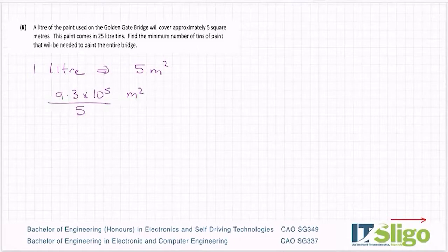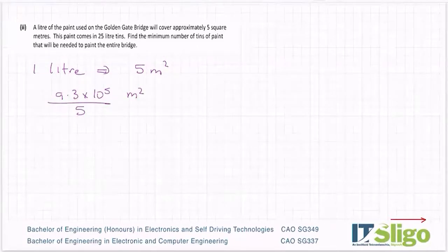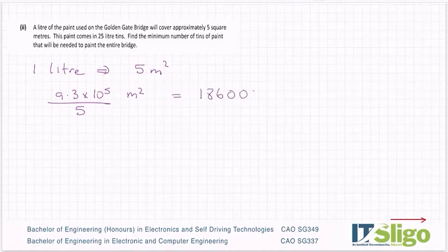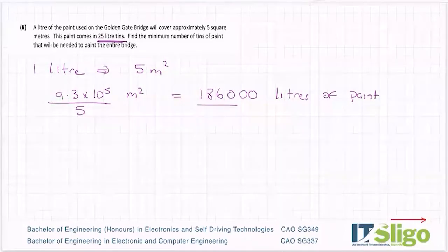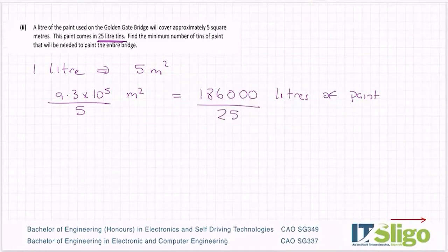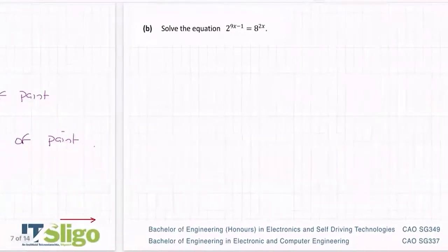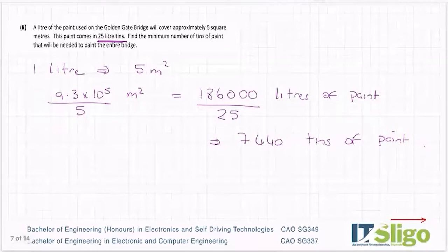I have 9.3 by 10 to the 5 meters squared. Let's divide him by 5. So 9.3 by 10 to the 5 over 5. And I get 186000 litres of paint required. So it comes in 25 litre tins. So if I divide this by 25, then I need 7440 tins of paint. Lot of paint to paint the entire bridge. So that was kind of the area and volume and a bit of maths in it.